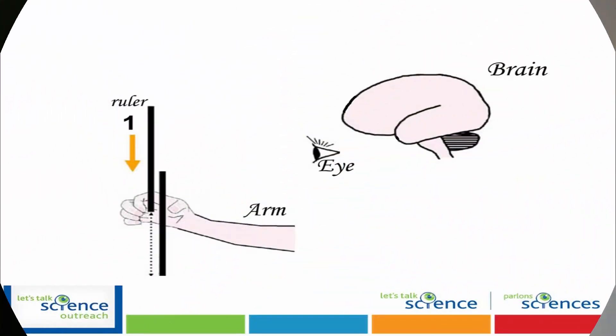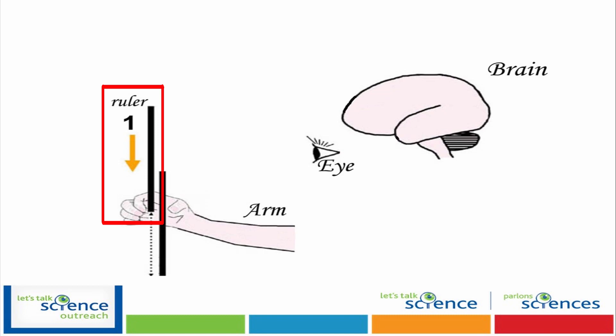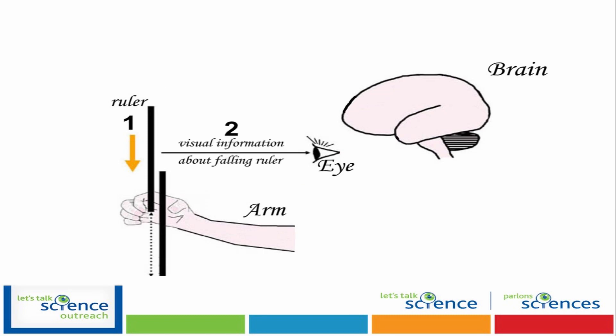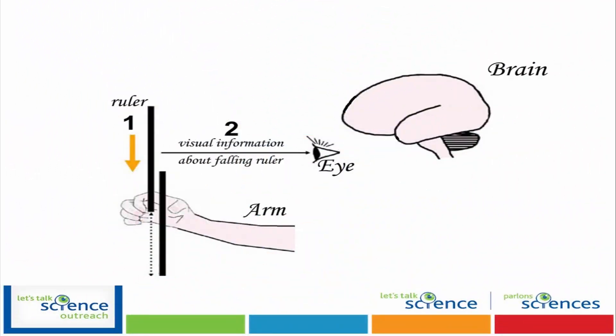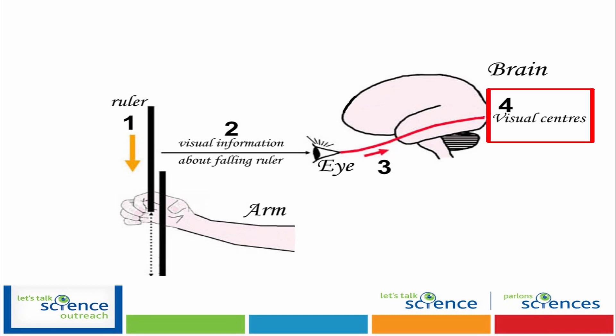So why do we have a reaction time? Why does it take time to react? We can start off with the ruler falling. What happens then is that information about the ruler falling goes to your eyes. From our eyes, the information then goes to nerves in our eyes. Nerves are special cells that act like information highways to our brain and around our body. Those nerves then send the information to the back of your head, where there is something called the visual center. The visual center is responsible for what you see.